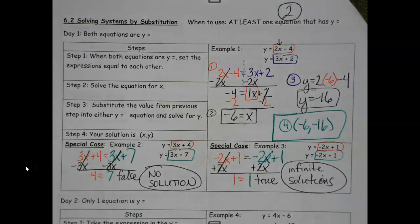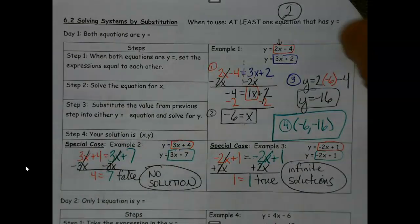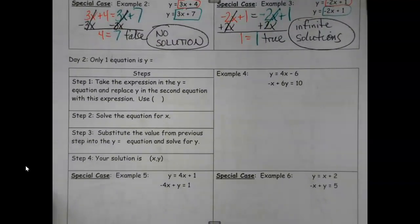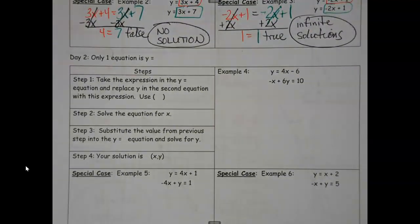Yesterday when we started substitution, we had both sides equal to y or both sides equal to x, and then we just set them equal and went about our business. We also got introduced to a couple of special cases if all of our variables disappeared. So now today we're going to add one piece to that. What we're going to run into today is that only one equation has y equals.